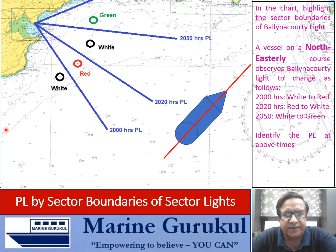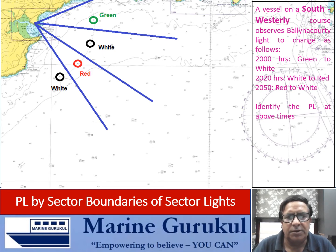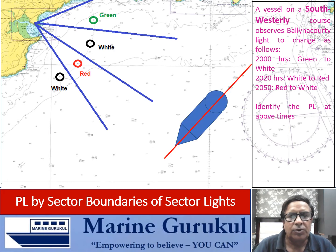Now let us have the vessel on the reciprocal course. Same light with sector boundaries, but the vessel is steering a southwesterly course. She observes Belina Koti to change from green to white at 2000 hours, from white to red at 2020, and from red to white at 2050. We need to identify these PLs at 2000 hours, 2020, and 2050.